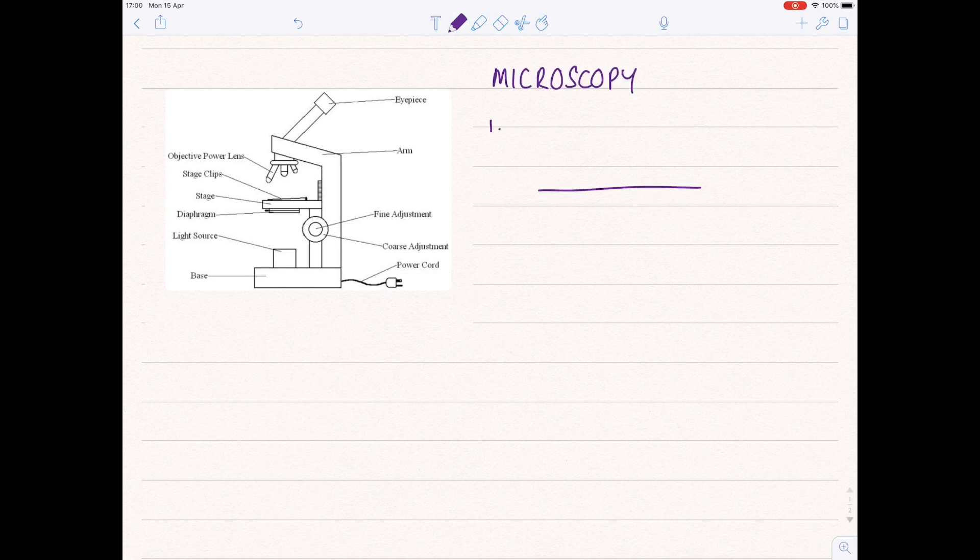I'm going to take you through the method needed in order to do this particular practical. In the first step, we need to get our microscope slide and then use a dropping pipette to add water, or at least a drop of water, to the slide. Step one: use a dropping pipette to put one drop of water onto the microscope slide.